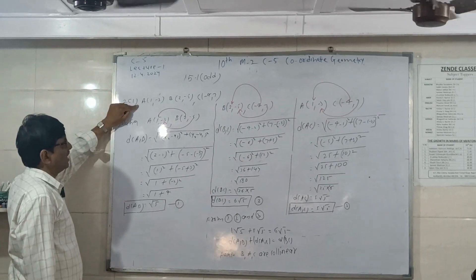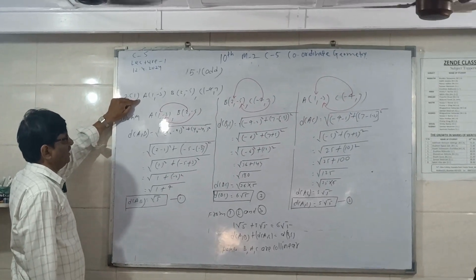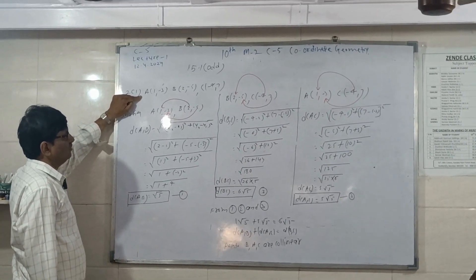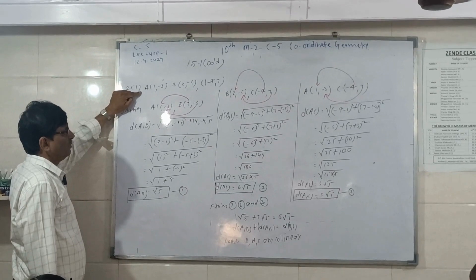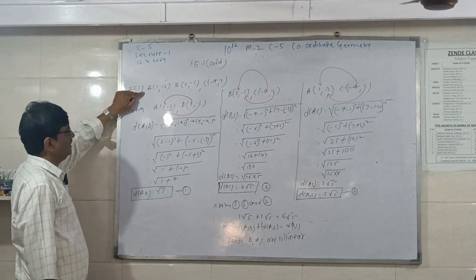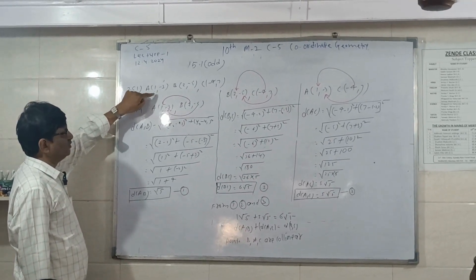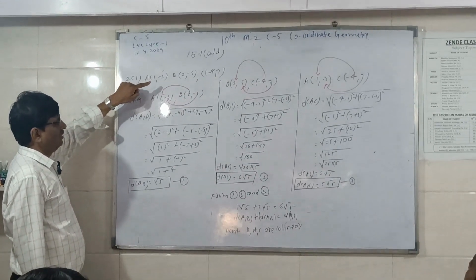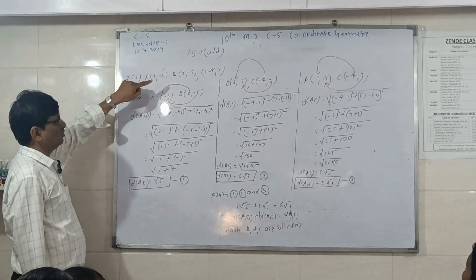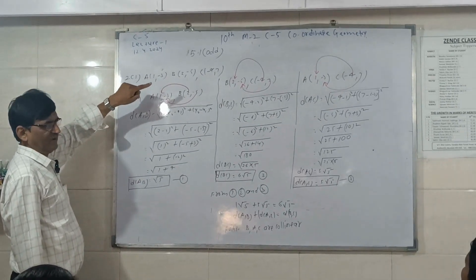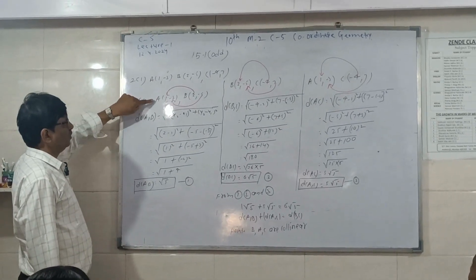A, 1 minus B, B, 2 minus 5, C, minus 4, 7. X1, X2, 1, 2, 3. X2, Y2, X3, Y2.